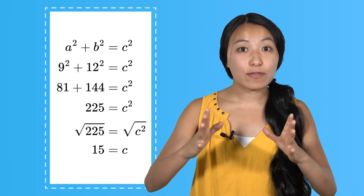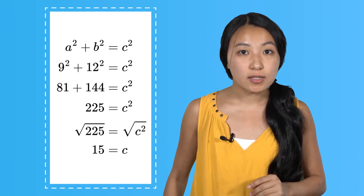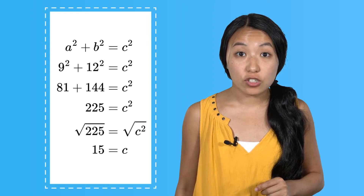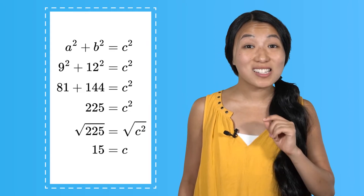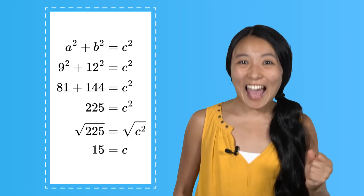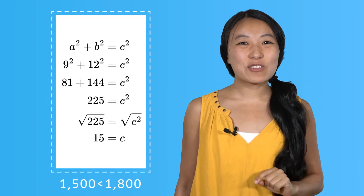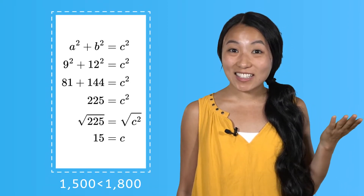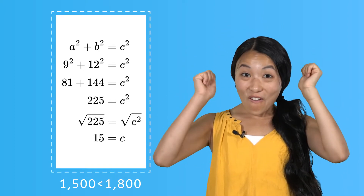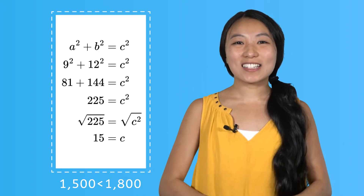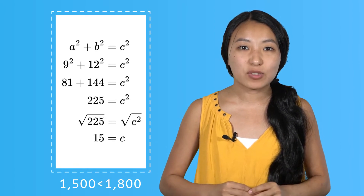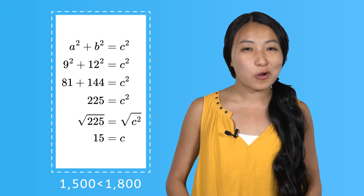That means if the drone flies directly from Josh's house to my house, it will have to travel 1500 feet. So what's the verdict — will Josh's drone be able to fly to my house? Yes! Because 1500 feet is within the range of 1800 feet. I cannot wait to tell Josh how much you've helped us, and I'm even more excited to be able to see his drone in action.